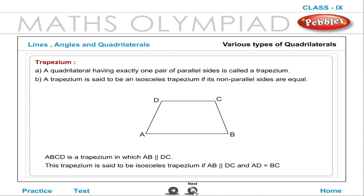Various types of quadrilaterals. Trapezium: A quadrilateral having exactly one pair of parallel sides is called a trapezium. A trapezium is called an isosceles trapezium if its non-parallel sides are equal. ABCD is a trapezium in which AB is parallel to DC. It is an isosceles trapezium if AB is parallel to DC and AD is equal to BC.